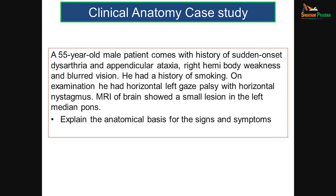Why is the pons important? We have a case history where a 55-year-old male patient comes with a history of sudden onset of dysarthria and appendicular ataxia, right hemibody weakness and blurred vision. He was a smoker. On examination, he had horizontal left gaze palsy with horizontal nystagmus. MRI of the brain showed a small lesion in the left median pons. After this session, let us see what is the anatomical basis for these signs and symptoms.